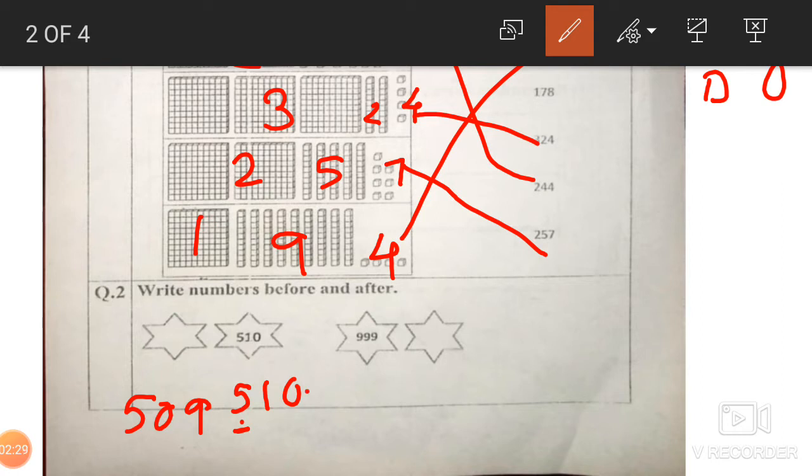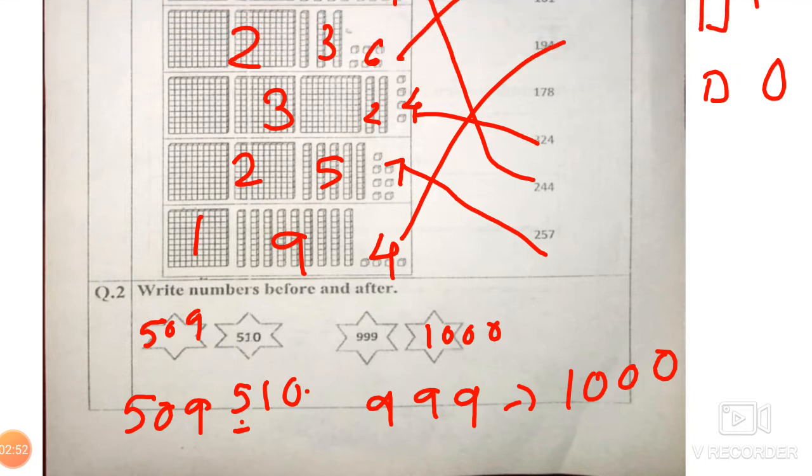Okay beta. And 0 ke pehle 9 likhne mujhe yaad hai sikhaya tha aapko in another way. That way. Then it is 999. 999 ke baad mein kya aayega? Yes. After 999 it is 1000. So here 1000 will come. And here 509 will come. Okay.